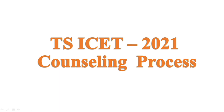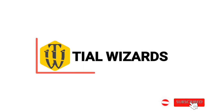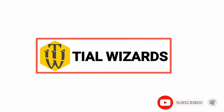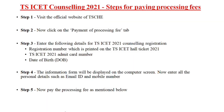Step one is to visit the official website, and step two is the payment processing tab. Step three is the payment tab — you have options including registration number, TSI site admission number, and a data button. If you are interested, click on continue and click on personal details like email and mobile number.